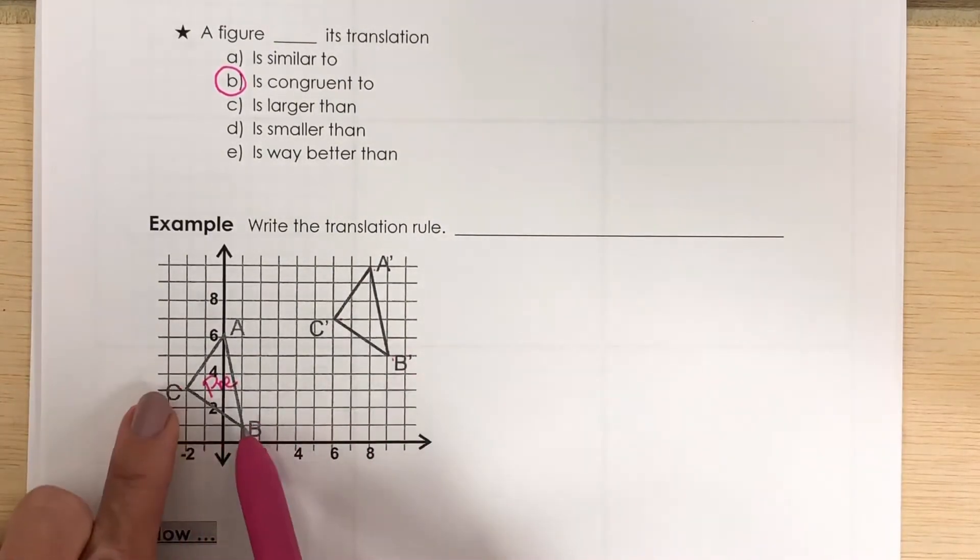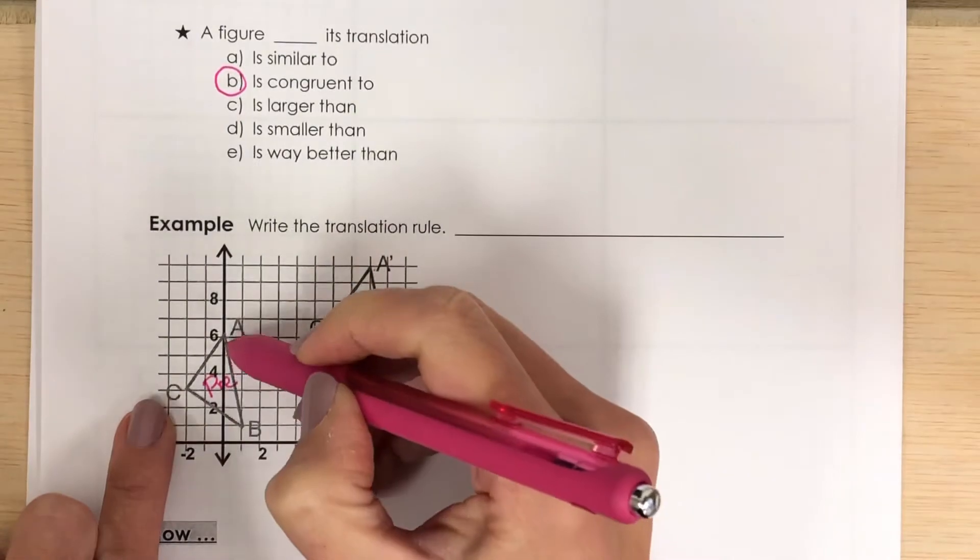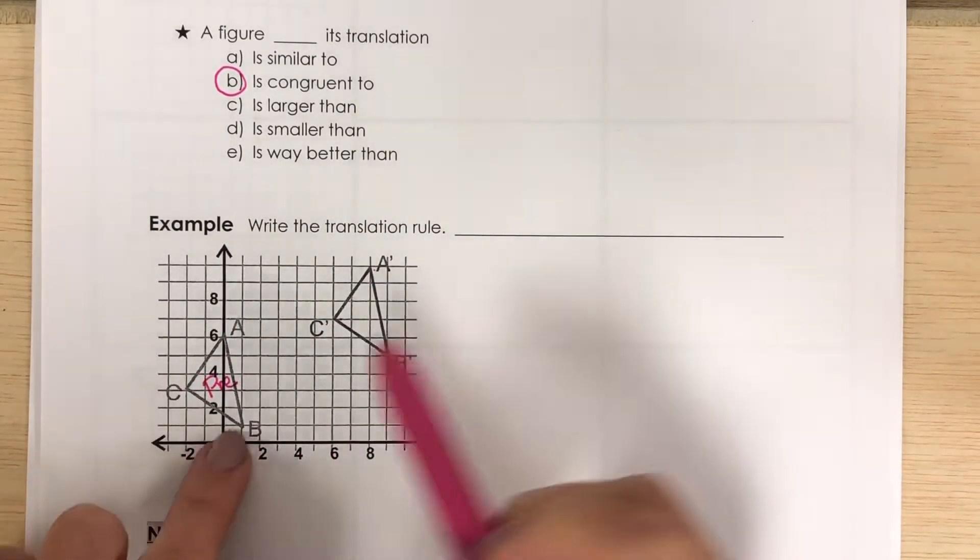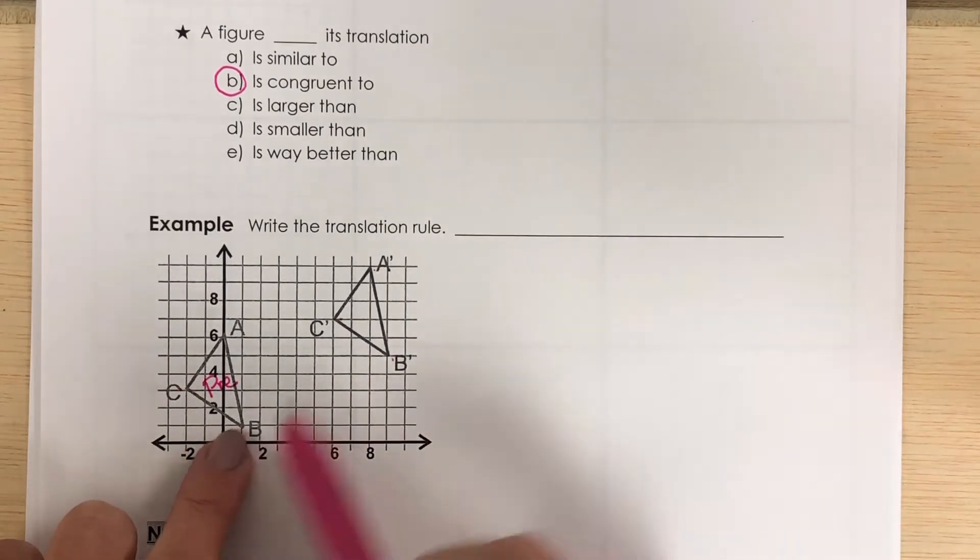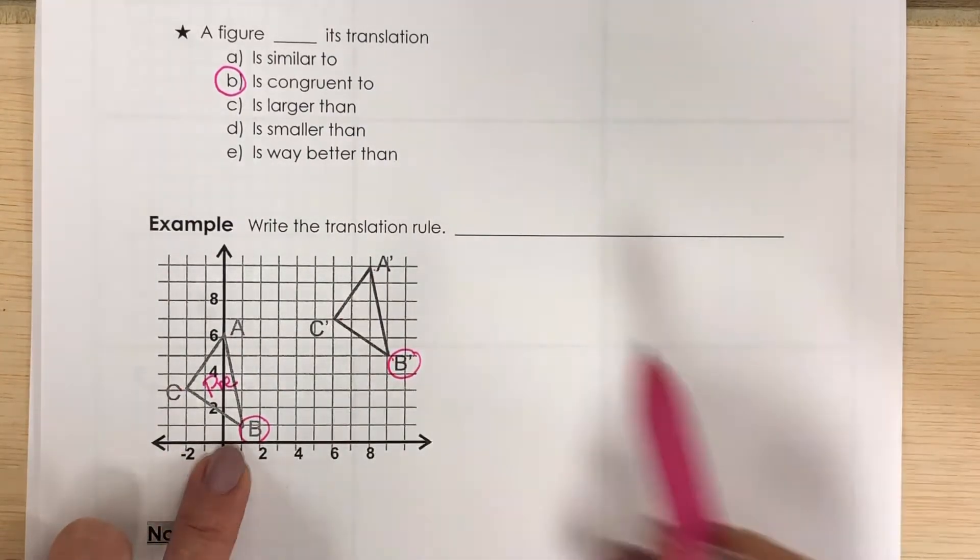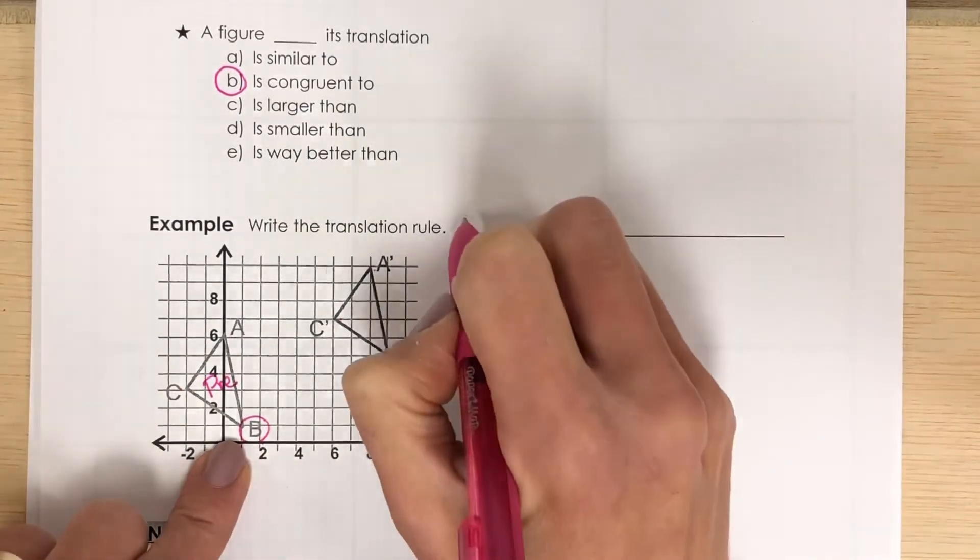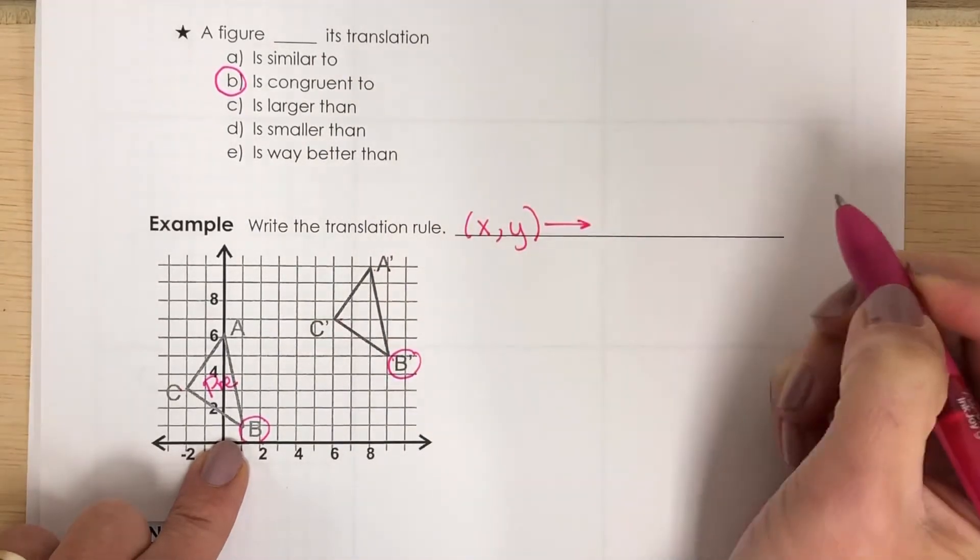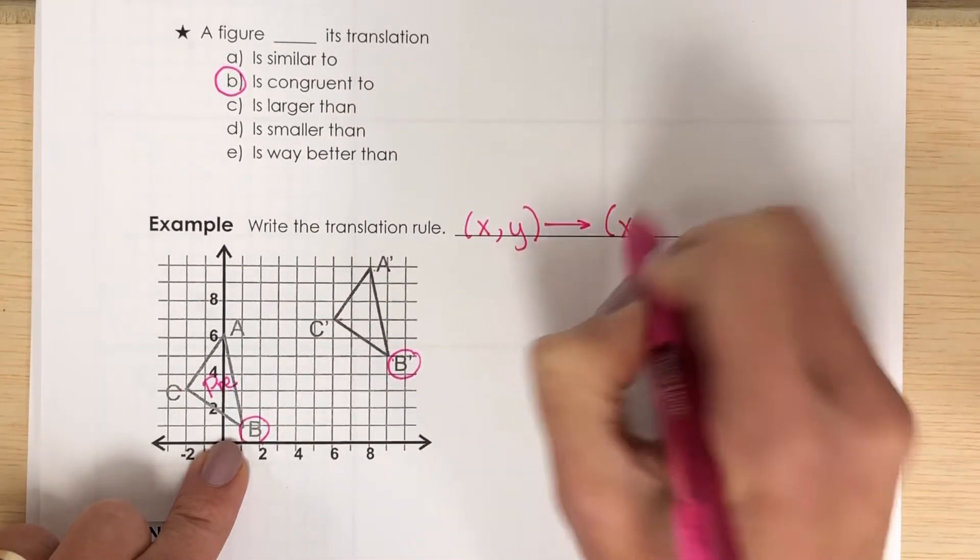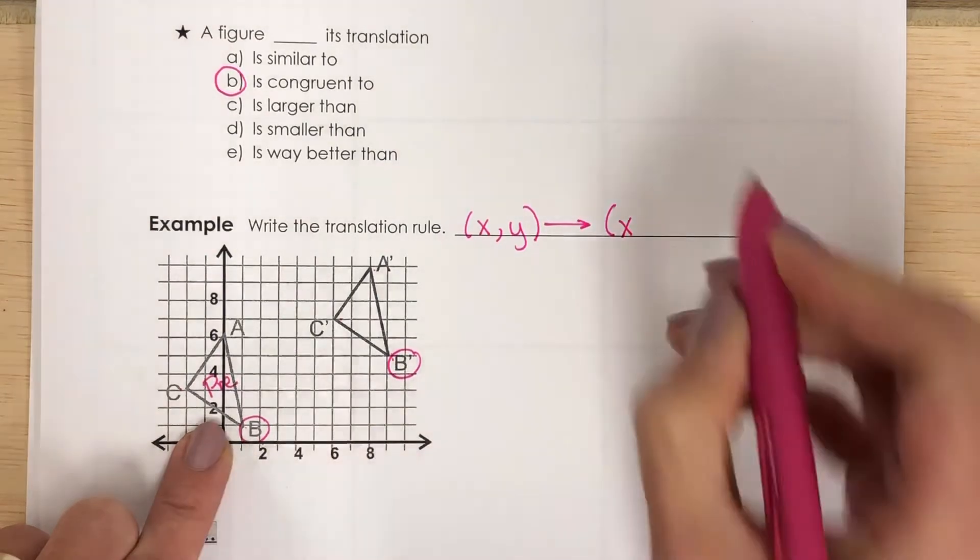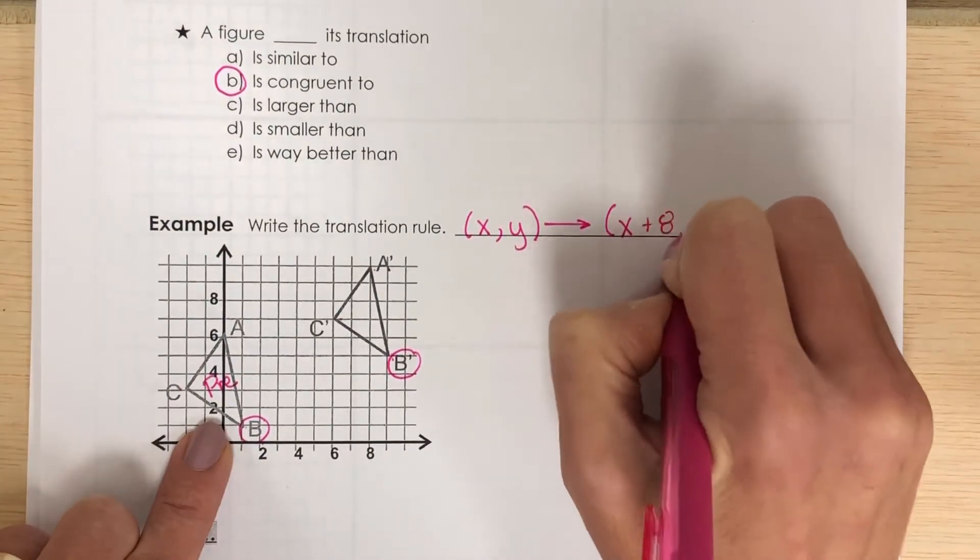So I know that each of these points and all of these little unnamed points that lie along the lines are going to move the same. So I'm just going to pick one, I'm going to pick point B to count. So B gets moved. Let's see. So I'm going to start with here's my original point. It gets moved, it gets translated. And what happens to my X values? My X values move over. 1, 2, 3, 4, 5, 6, 7, 8. So I'm adding 8 to each of my X values.